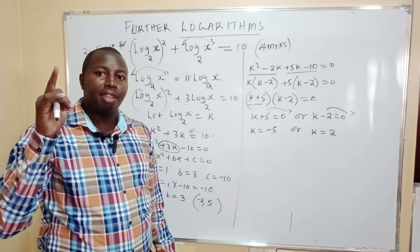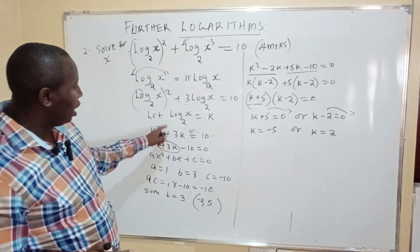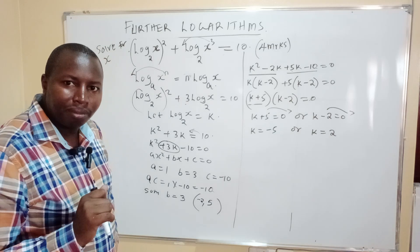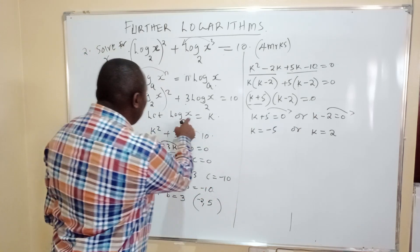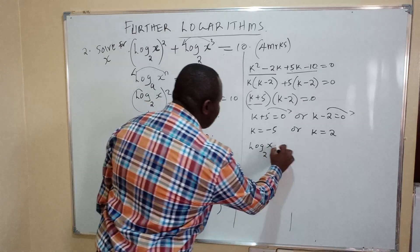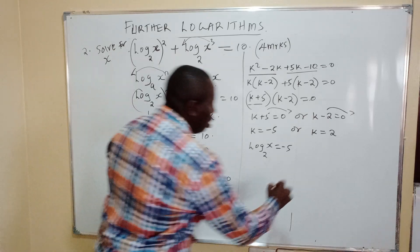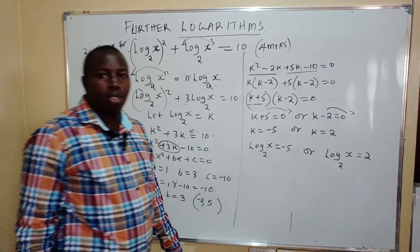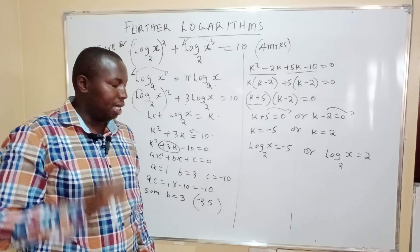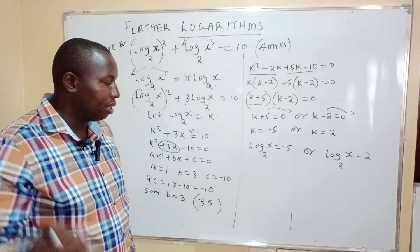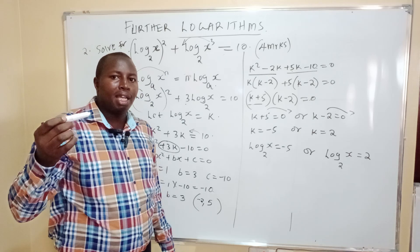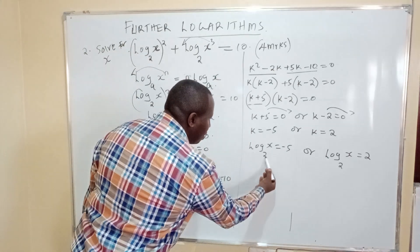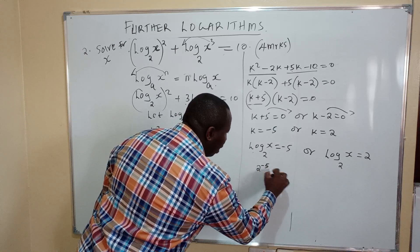The examiner asks us to find x. We introduced k because log x to base 2 equals k. So going back: log x to base 2 equals negative 5, or log x to base 2 equals 2. Converting to index form: 2 to the power negative 5 equals x, so x equals 1 over 2 to the power 5, which is 1 over 32.